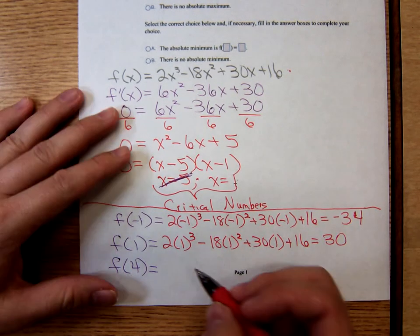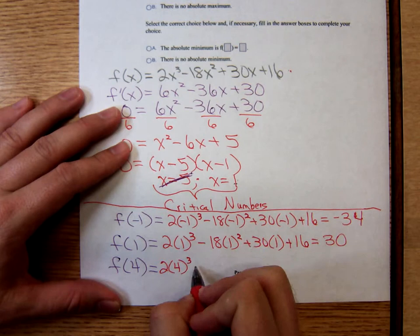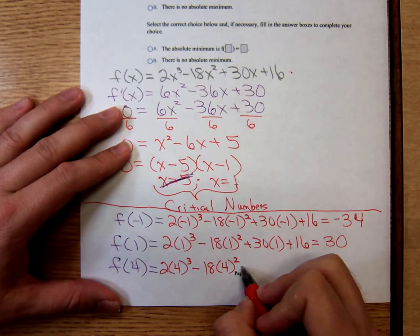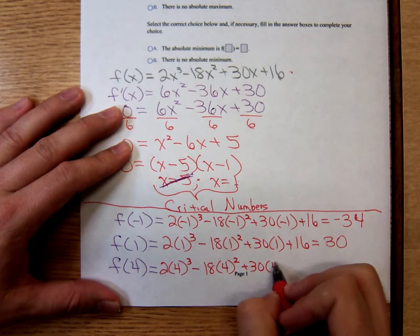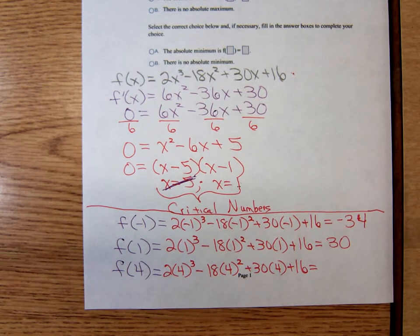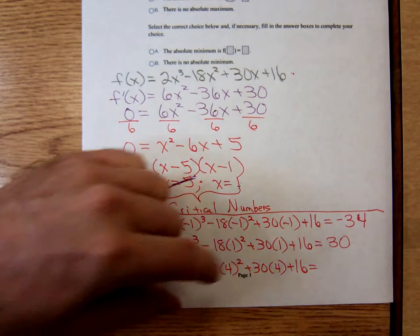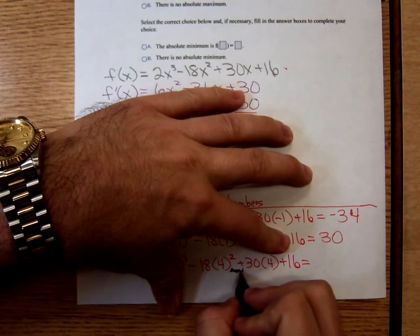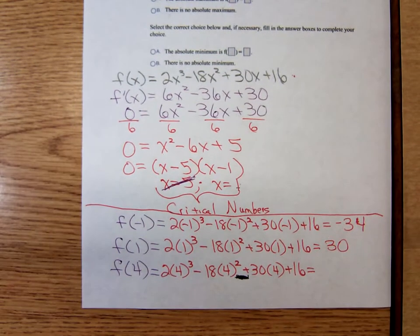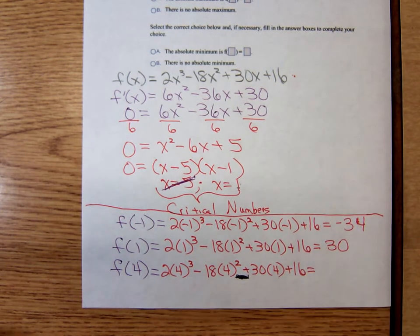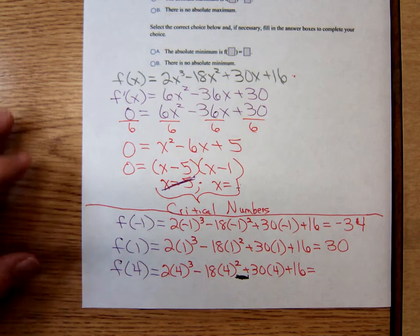One more — plugging in 4. We have 2 times 4 cubed minus 18 times 4 squared plus 30 times 4 plus 16. Plugging in 4 for x, we're going to get negative 24.